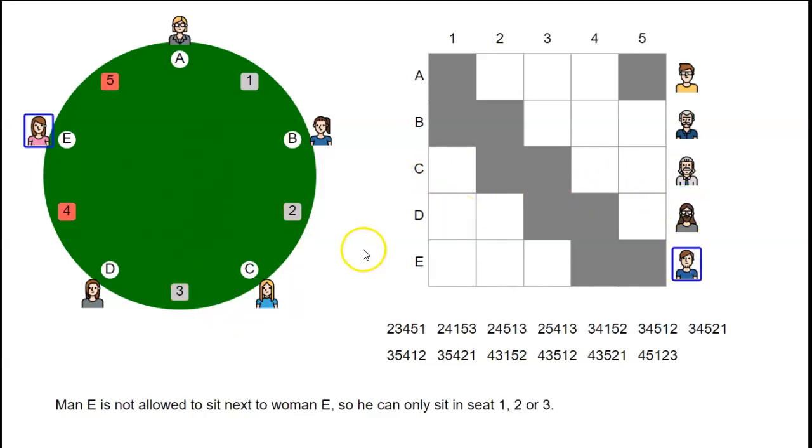We carry on in the obvious way and end up with this chessboard diagram with a staircase pattern in the middle blacked out, plus one extra square at the top right. To make a seating plan is the same as placing five non-attacking rooks on this board. For example, man B is allowed to sit in seat 4, so we put him there—that's the same as placing a rook there.